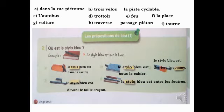Maintenant, les prépositions de lieu. Et le stylo bleu — où est le stylo bleu ? Exemple : « Le stylo bleu est sur le livre. » Phrase A : « Le stylo bleu est dans le carton. » Phrase B : « Le stylo bleu est sur le cahier. »